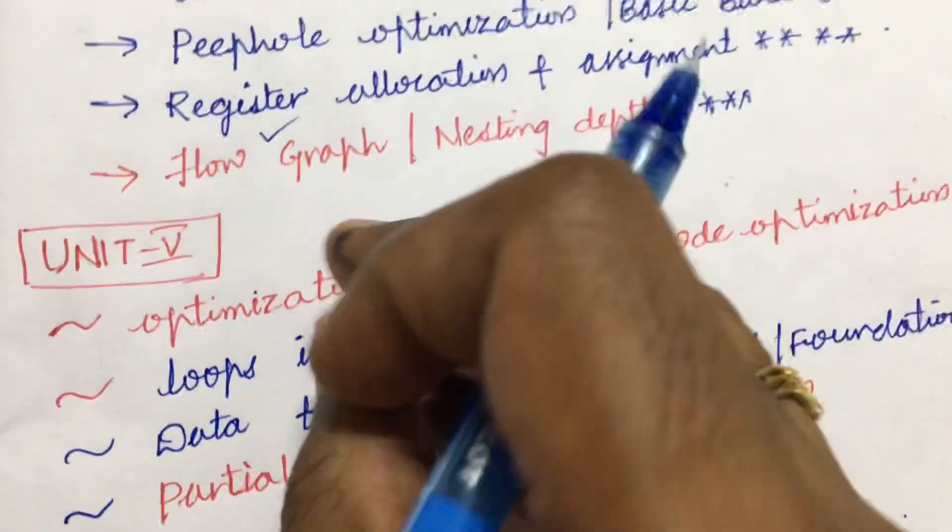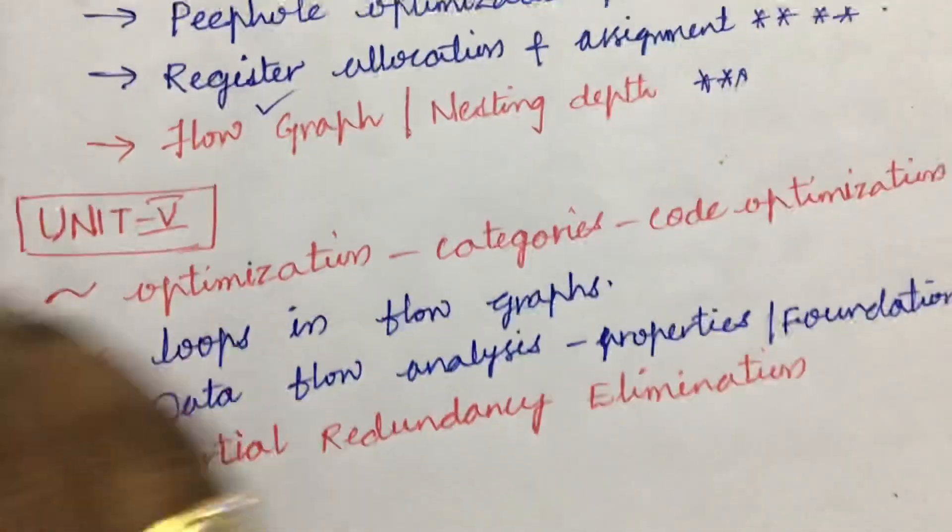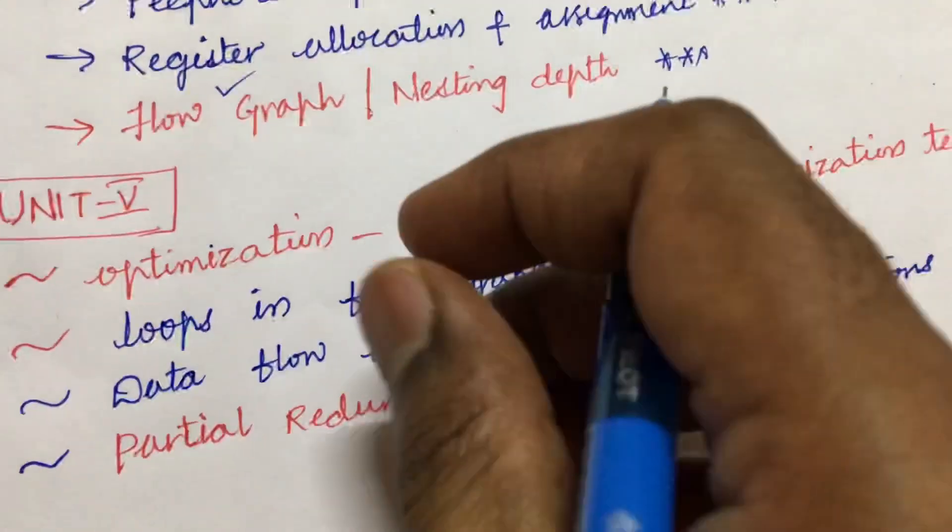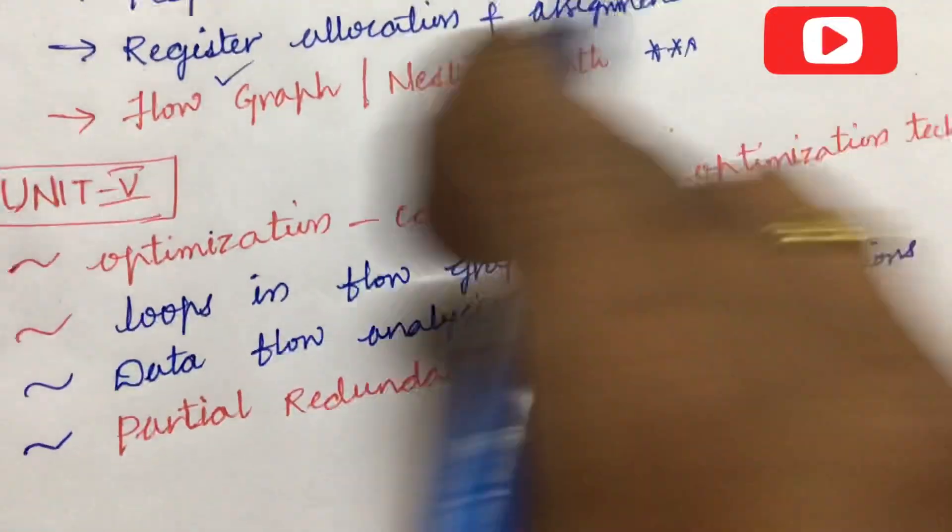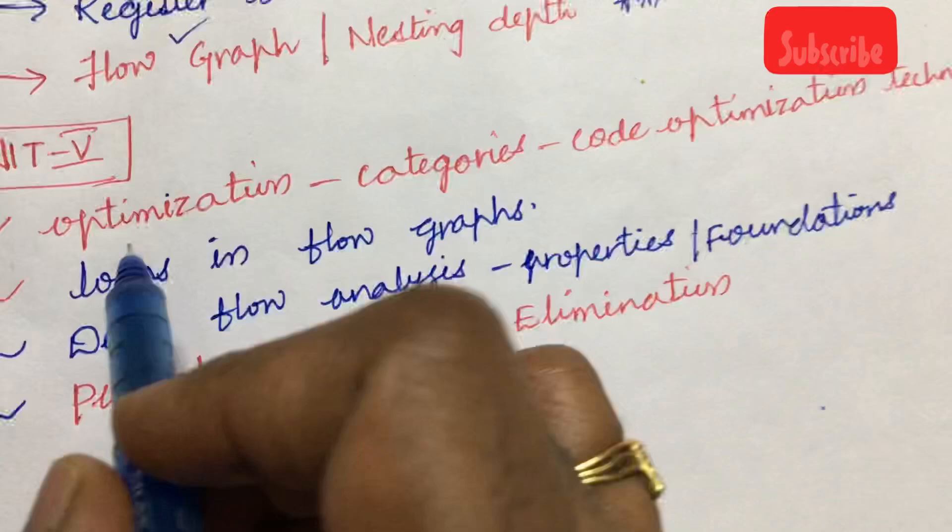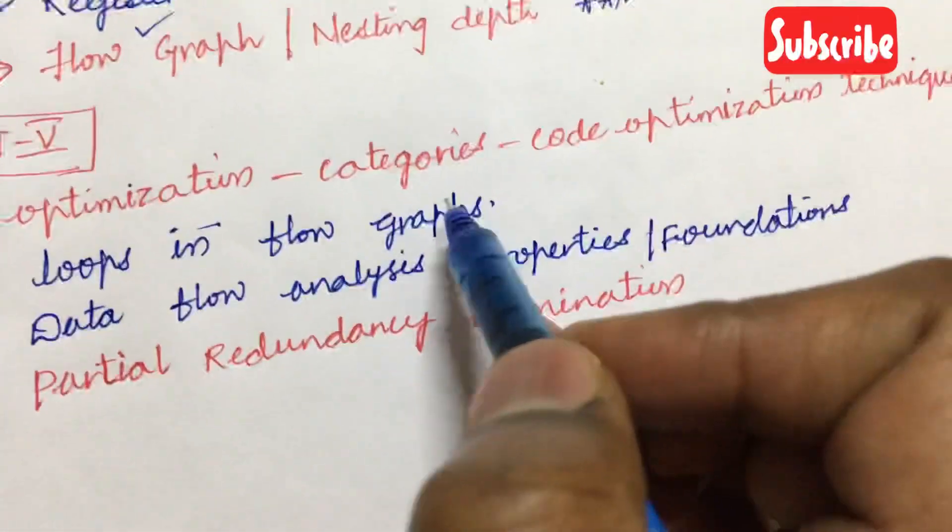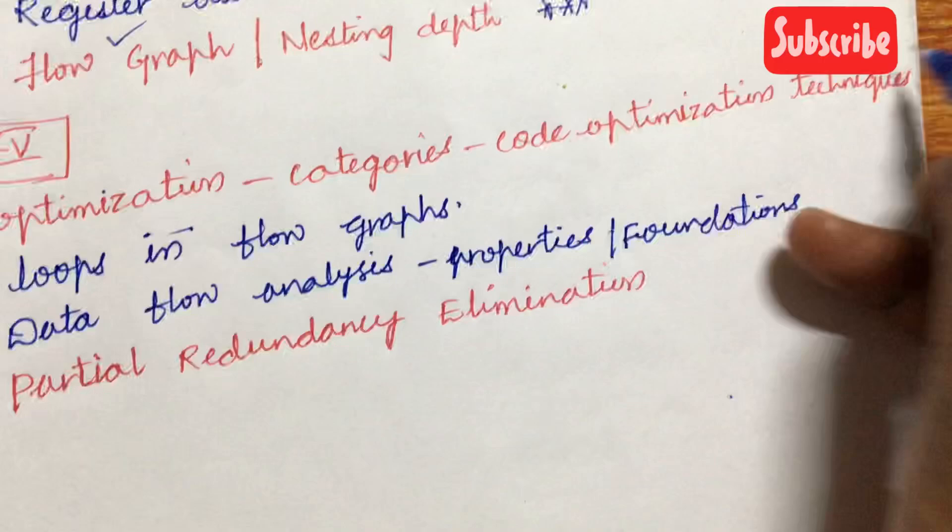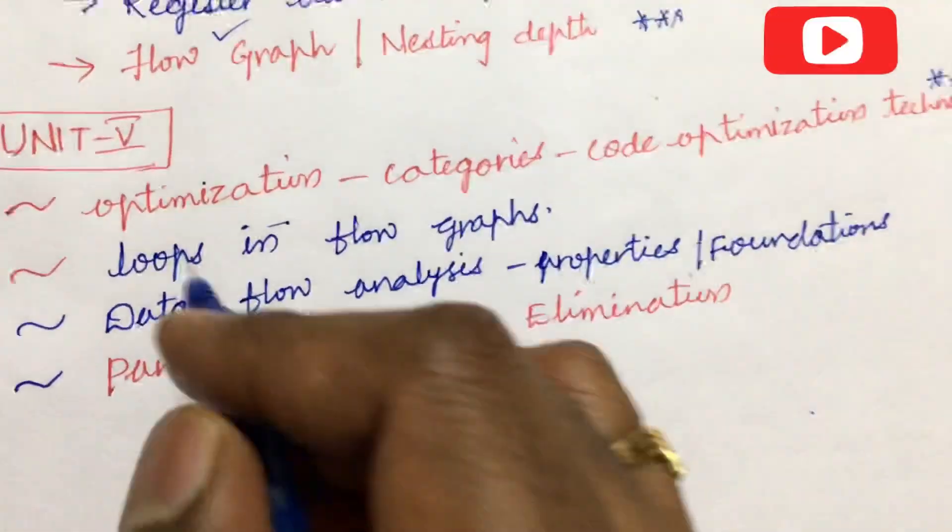Later, we look at Unit 5. Unit 5 is so small, so short, so that you can read out these for your internal examination. Make sure that if you are skipping any of the units 2 and 3, you can write the fifth unit very easily. The optimization and its categories and code optimization technique is the gunshot question for eight marks for this time.